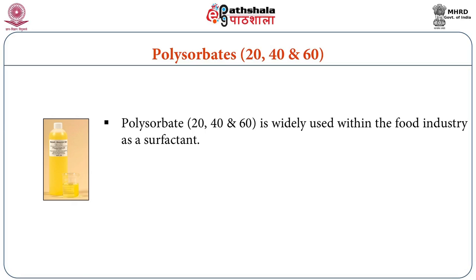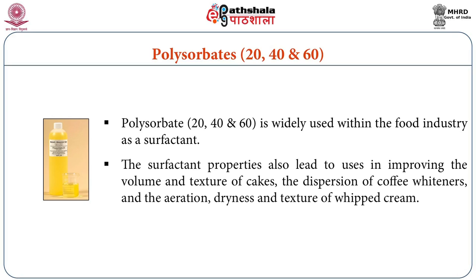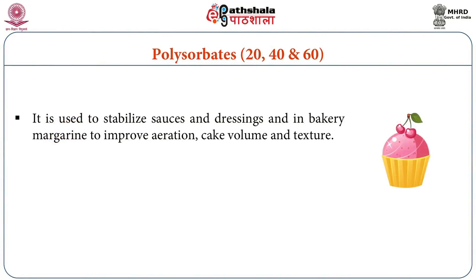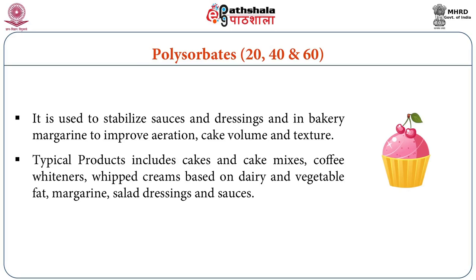The next category is polysorbates — polysorbate 20, 40 and 60 — which are widely used within the food industry as surfactants. Their surfactant properties lead to use in improving the volume and texture of cake, the dispersion of coffee whiteners, and the aeration, dryness and texture of whipping cream. They are also used to stabilize sausages and dressings and in bakery margarine. Typical products include cakes and cake mixes, coffee whiteners, whipped cream based on dairy and vegetable fat, margarine, salad dressing and sausages.